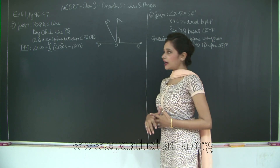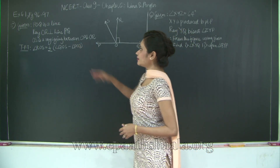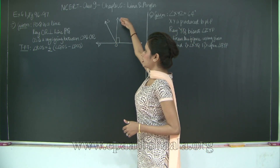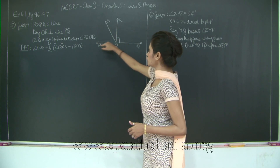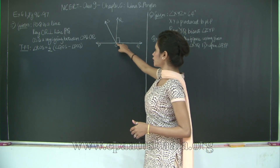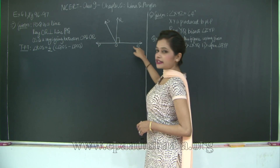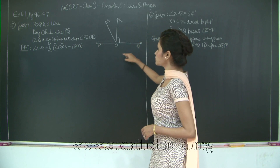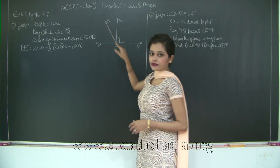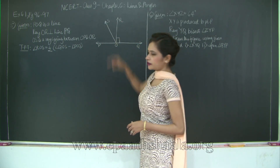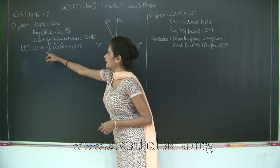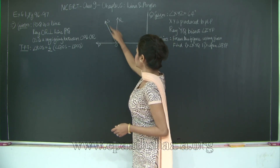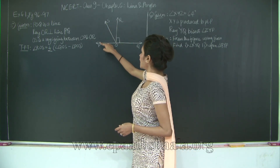Let's read out the given and what we need to prove. We have POQ as a line. Ray OR is perpendicular to line PQ, and OS is a ray lying between OP and OR. We need to prove that angle ROS is half of angle QOS minus angle POS.